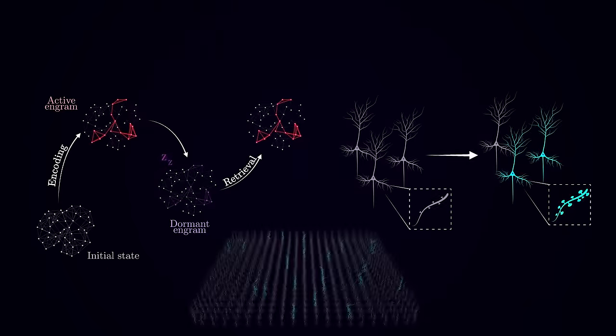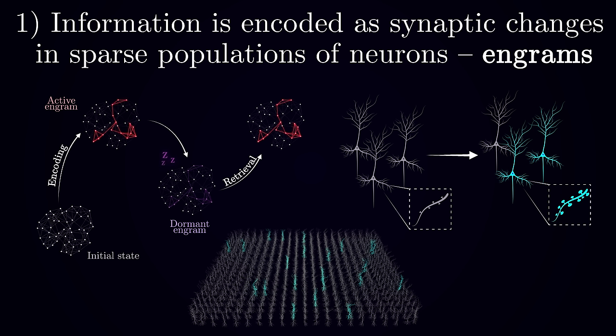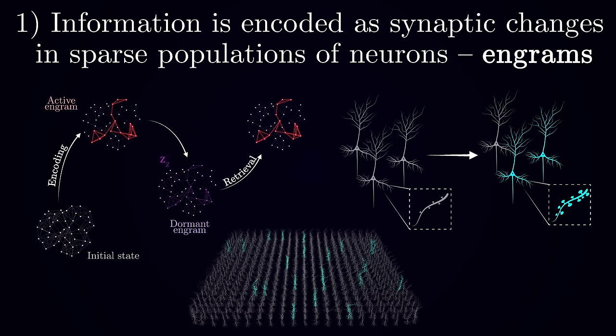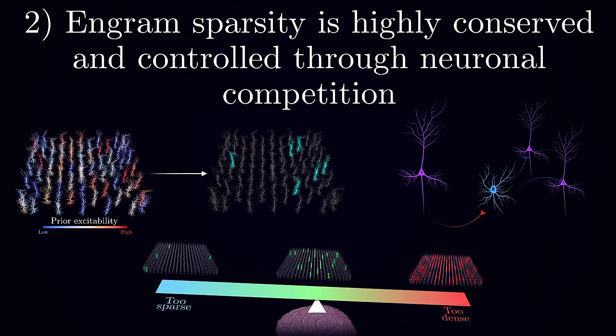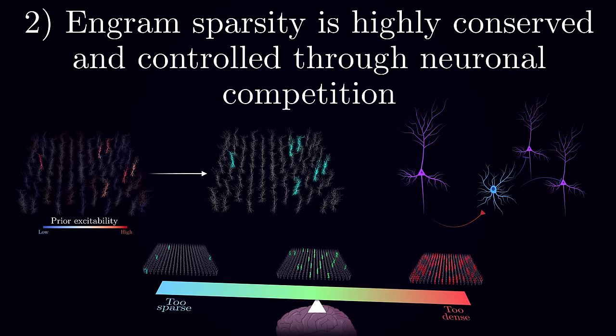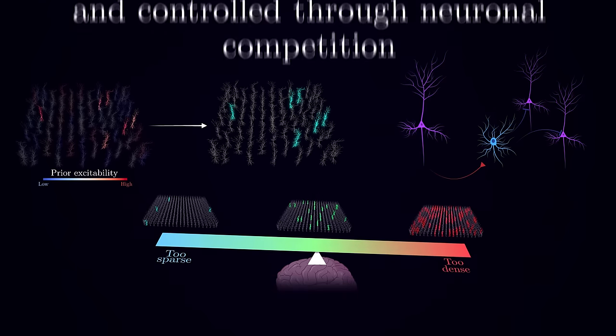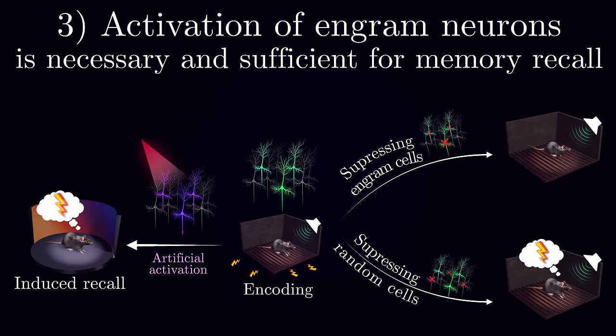Alright, let's try to tie everything together. In this video, we have seen how information about experiences is encoded as synaptic changes in sparse ensembles of neurons known as memory traces or engrams. The sparsity of engrams is highly conserved and is kept at optimal values through a kind of a competition where most excitable cells are preferably chosen to be recruited to the memory trace. Activation of these chosen neurons is both necessary and sufficient for memory recall, and by manipulating the activity of these cells, we can evoke memories, delete them and even create a new memory in the absence of experience.